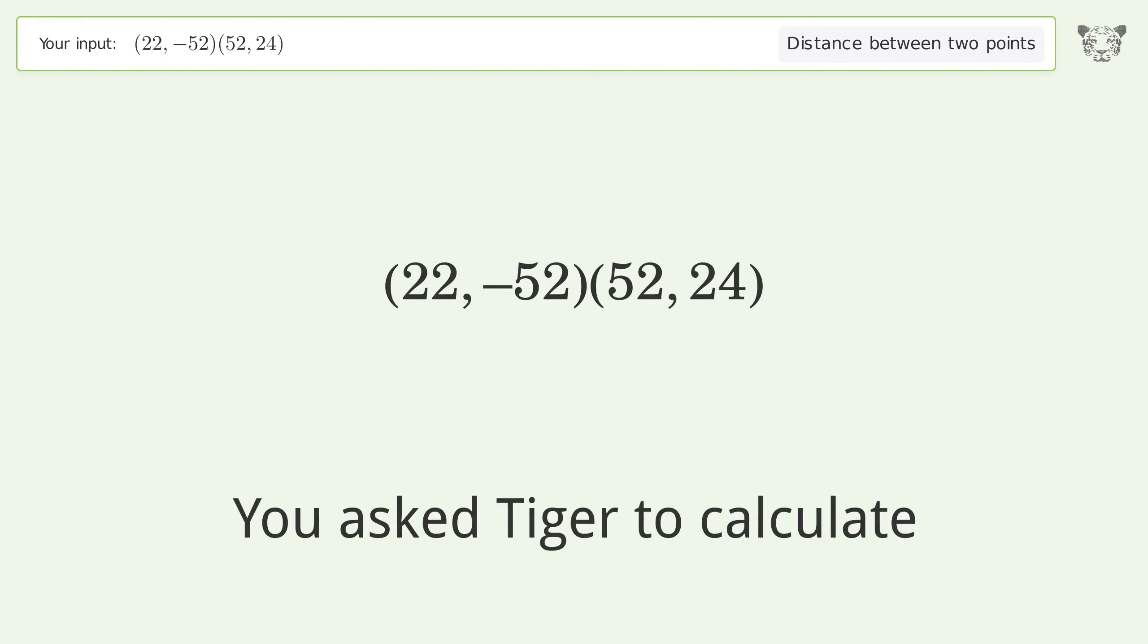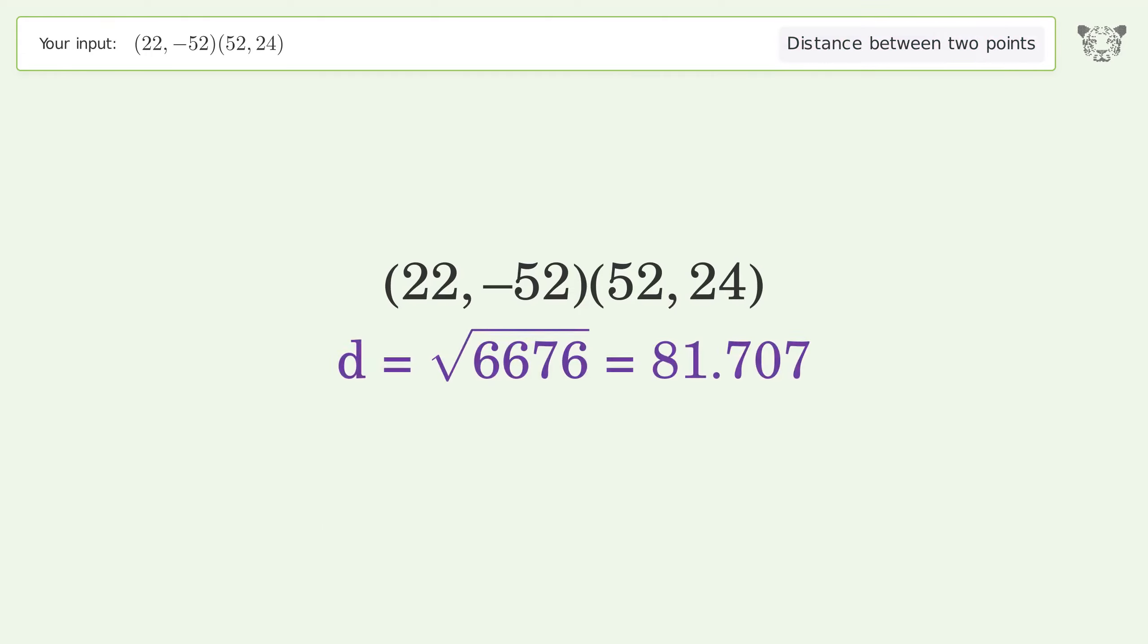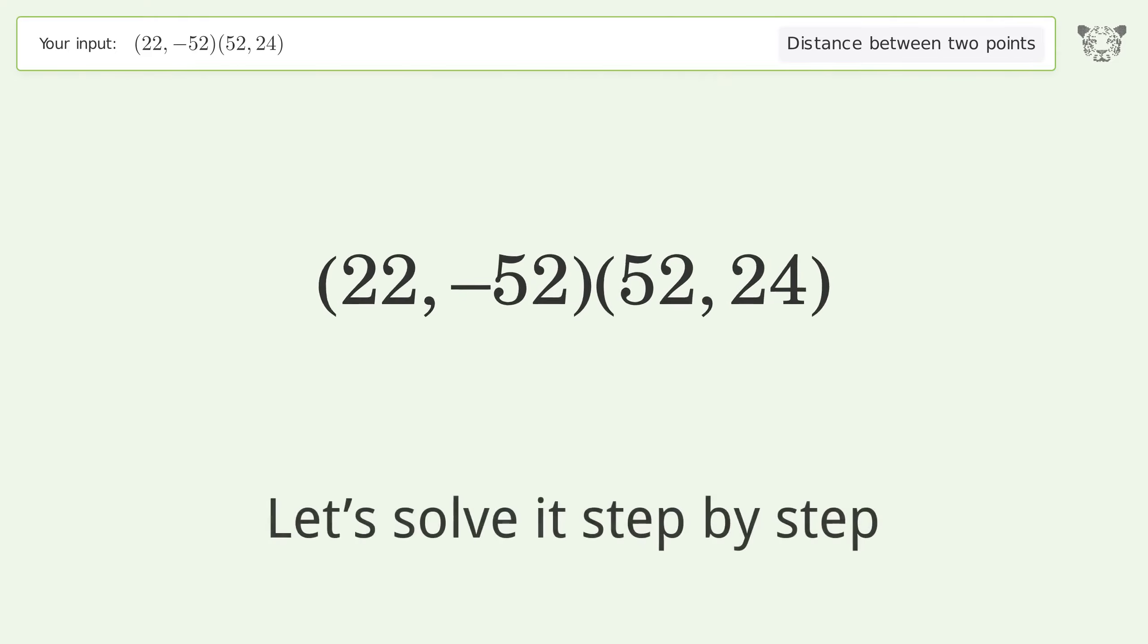You asked Tiger to calculate the distance between two points. The distance between the two points is the square root of 6676 or 81.707. Let's solve it step by step.